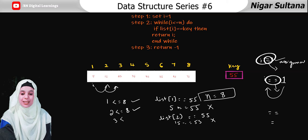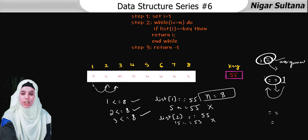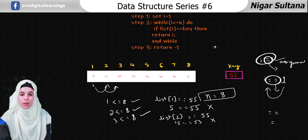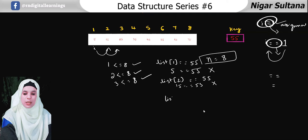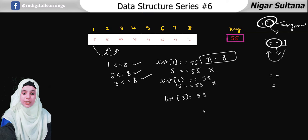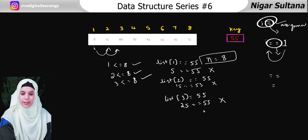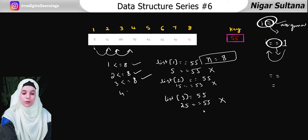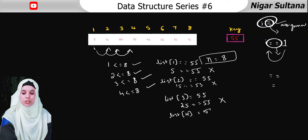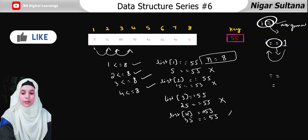Is 3 less than or equal to 8? Yes, true. Check the if condition: list of 3 is 25. Is 25 equals to 55? No, false. Increment i — i is now 4. Is 4 less than or equal to 8? Yes, true. Check: list of 4 is 35. Is 35 equals to 55? No, again false.